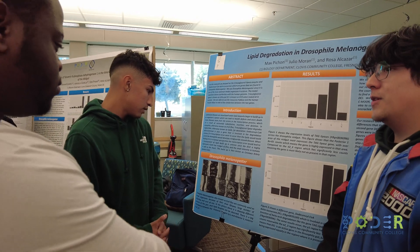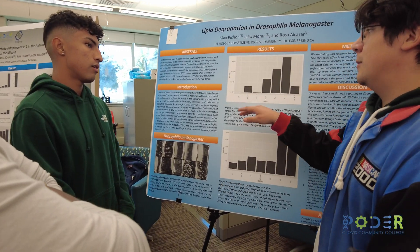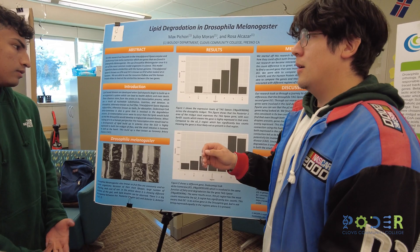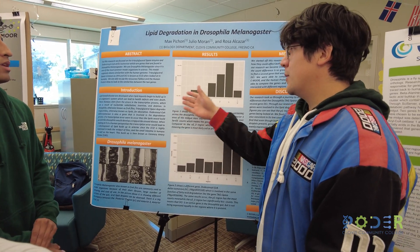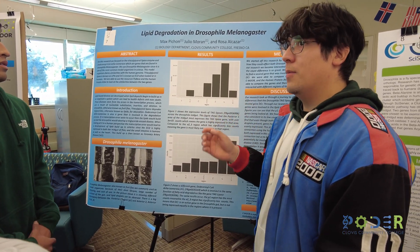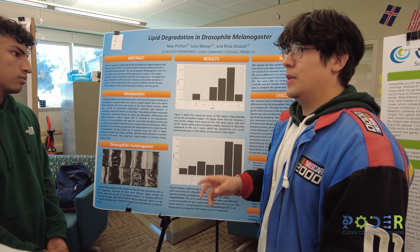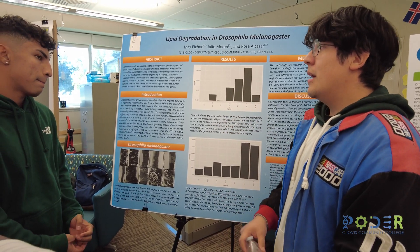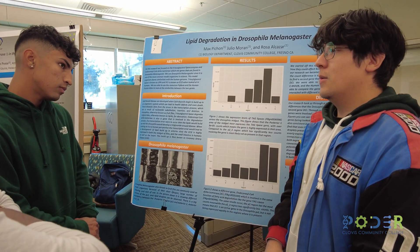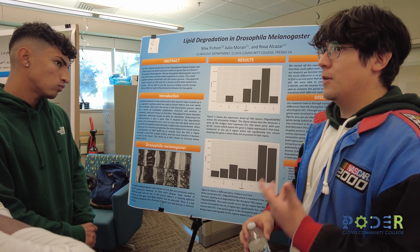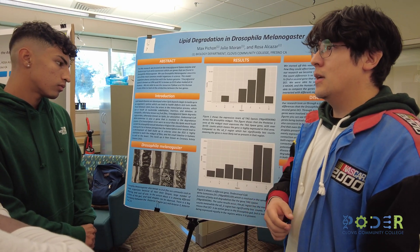Through our research we immediately found a discrepancy throughout the midgut in the gene tagophase, which was expressed throughout the whole midgut but was mostly expressed in the posterior one region. We were really interested in the anterior region, which is where the gene is mostly focused, so we were wondering why there was such a big discrepancy.